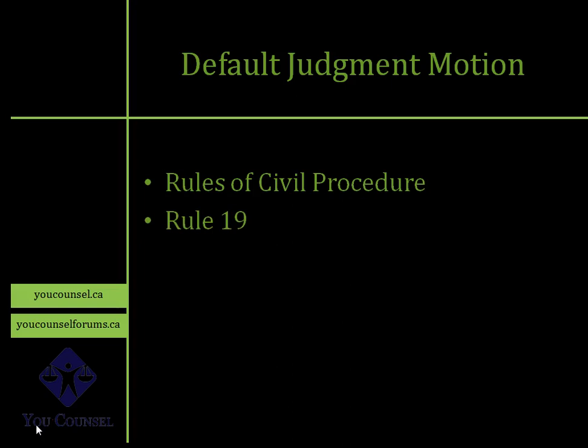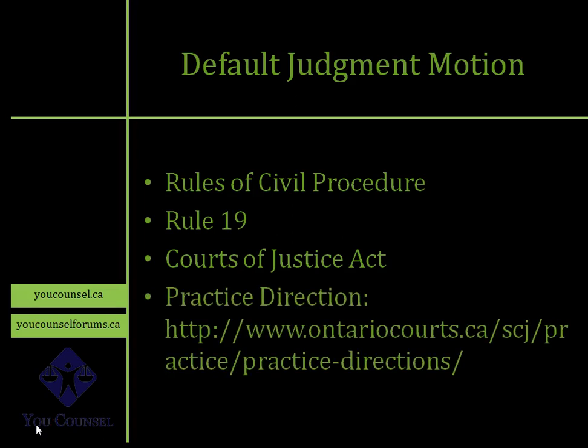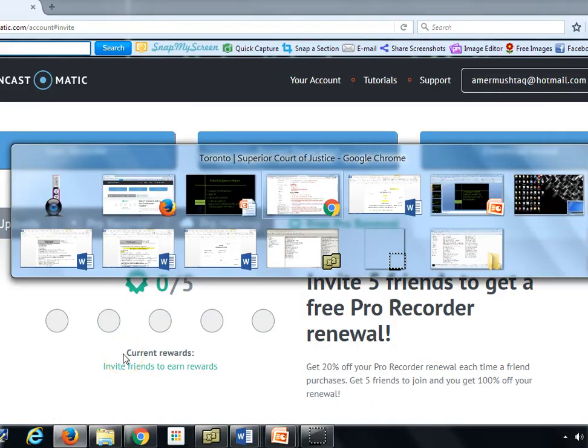Keep in mind that the Rules of Civil Procedure of Ontario apply to how you bring a motion for default judgment — specifically Rule 19. You will also want to look at Rule 57 if you want to consider costs, and other rules as they apply. The Courts of Justice Act, which is the authority for the Rules of Civil Procedure, is also relevant. But most importantly, you want to look at practice directions.